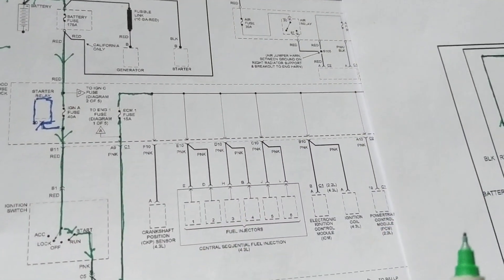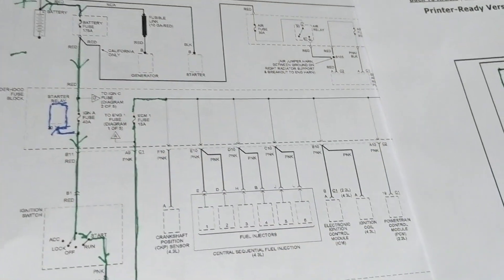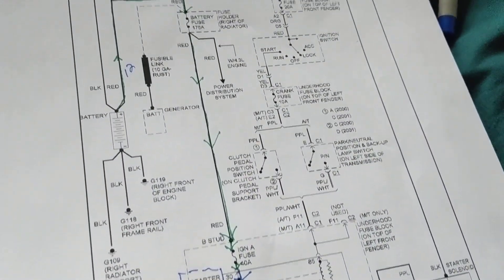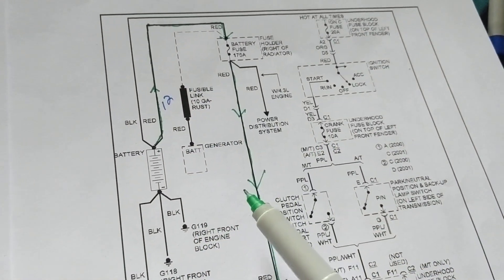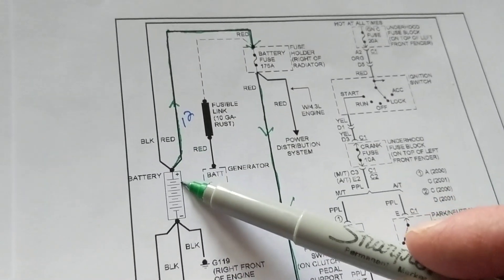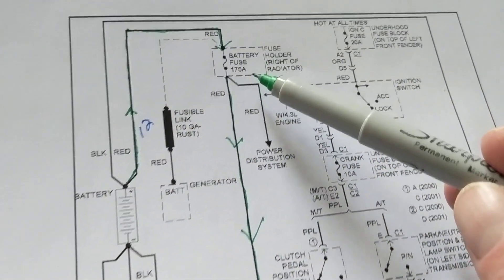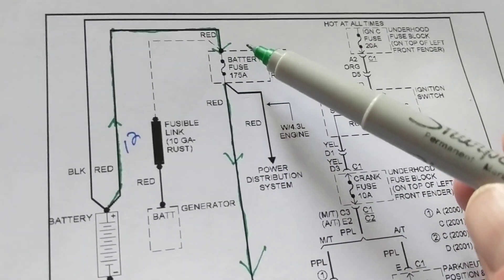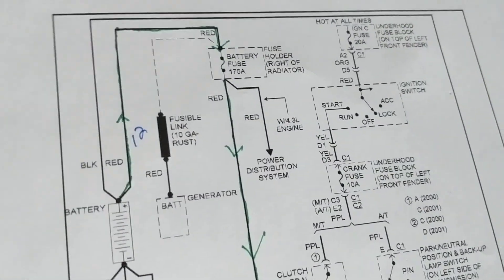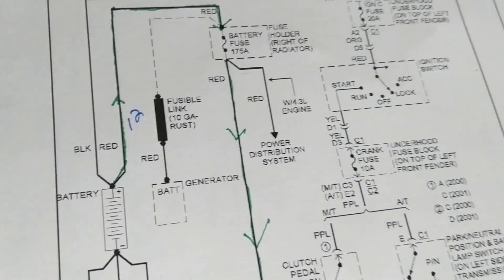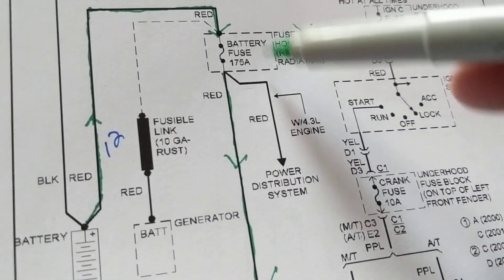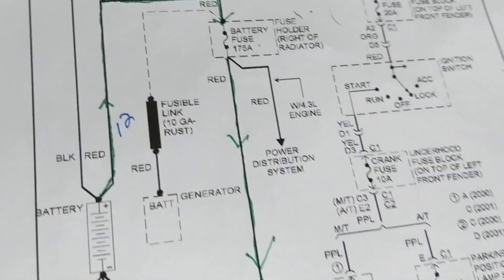When you feel comfortable with this type of diagram, you move over to the actual component-level diagram. Let's first work on the block diagram. Before that, you'll see the battery symbol — we know it's going through a red wire into the battery fuse, which is a 175-amp fuse — that's the highest rated fuse. Its location is 'right of radiator,' and the diagram conveniently tells you the location right next to the component.